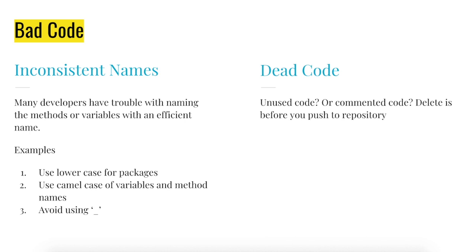Then there is dead code. If you have unused code or commented-out code, delete it before you push to the repository, because that commented code or unused code is completely not needed when you build your package. This is a good standard practice to follow the next time you push code to the repository.